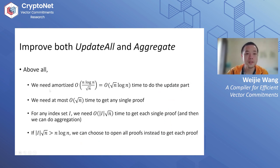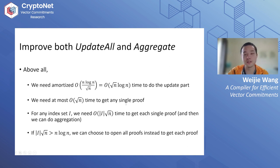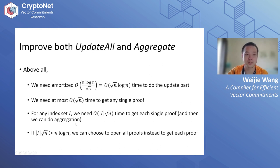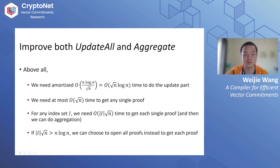In total, we need amortized O(n log n / sqrt(n)) = O(sqrt(n) log n) time for the update part, and at most O(sqrt(n)) time to get any single proof since update-single-proof is O(1). For any index set I, we need O(|I| * sqrt(n)) time to gather the single proofs and then perform aggregation. We don't care how the aggregation is done, but we can do it since we have the single proofs.